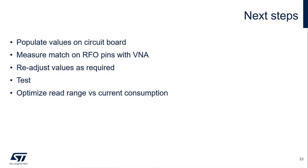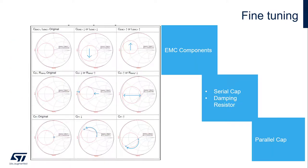So what are the next steps? As mentioned before, the simulation does not take into effect the traces on the board. In order to check if the matching is correct, we have to install the components on our board and re-measure with the VNA. This time, we measure at the RFO pins with the power off, unless we're using AAT. We then compare it to the simulation and adjust the populated values so that the measured S11 looks close to the simulated S11. Once they are similar, you then begin testing and optimizing based upon current consumption versus read range — typically achieving the desired read range and then increasing the impedance match to reduce the current consumption to an acceptable level.